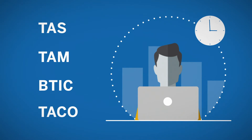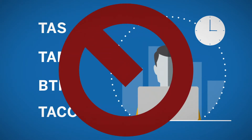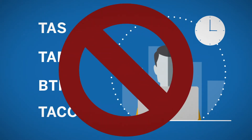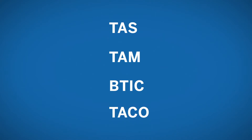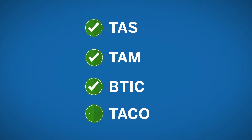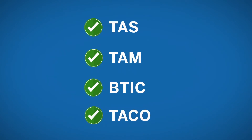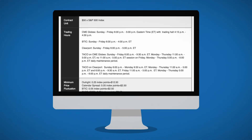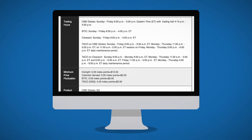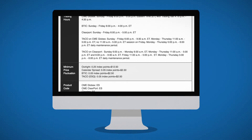Entering orders outside of these times is strictly prohibited. Market participants must have appropriate protocols in place to ensure that TAS, TAM, BTIC, and TACO orders are not submitted to Globex prior to the receipt of the security status message indicating that the market has transitioned to the pre-open. Eligible order entry times can be found on the Contract Specifications page.